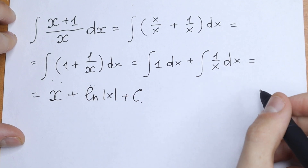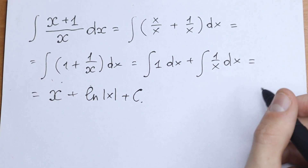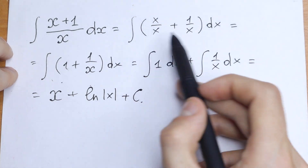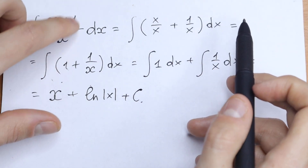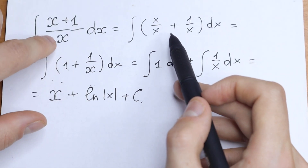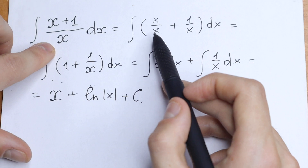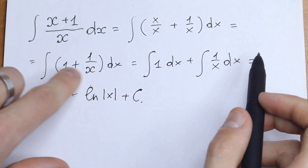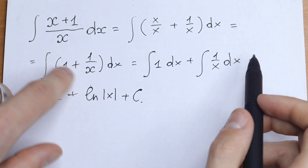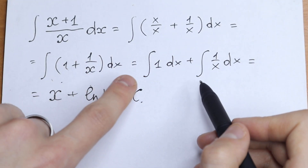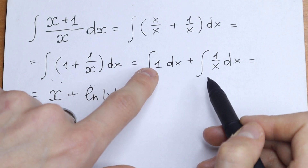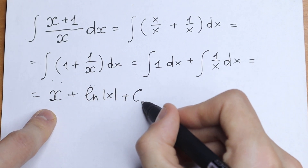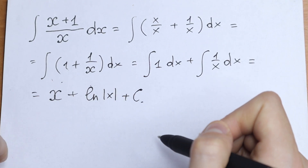So that is our answer — a really good trick: dividing by x, verifying we get the same expression, then using the integral sum property to handle each part as a table case.